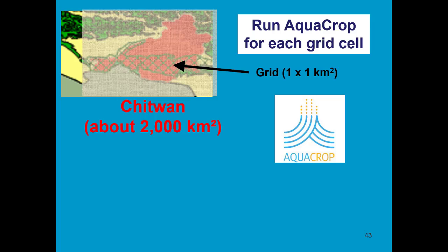One way of running a regional application is to put a grid on the region under consideration and then run AquaCrop for each grid cell. This will result in a large number of simulation runs.